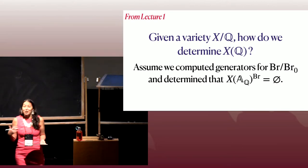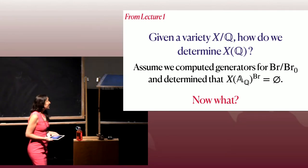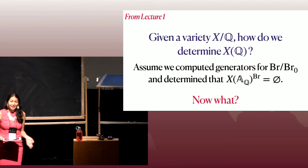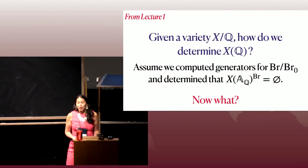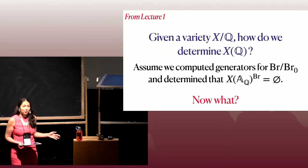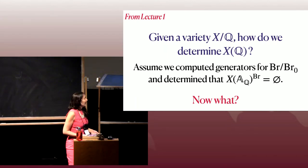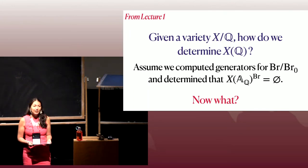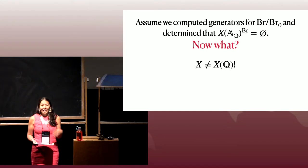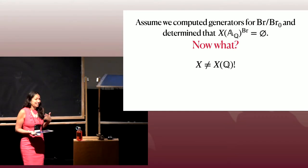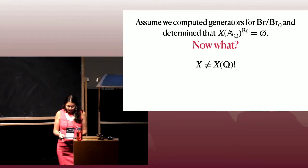Over the last two lectures, we learned about the Brauer-Manin obstruction and how you could, with enough effort and luck, compute the Brauer group and the Brauer-Manin obstruction. Say we've done that and determined that the Brauer set is empty. Depending on how you stumbled across this variety, that might be the end of the story. But you might have wanted to know the rational points because you were interested generally in the arithmetic of this variety X.